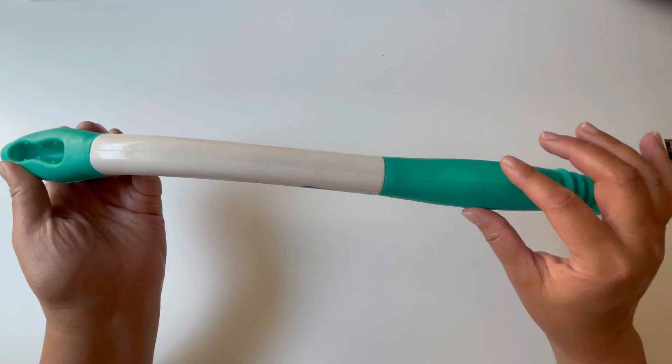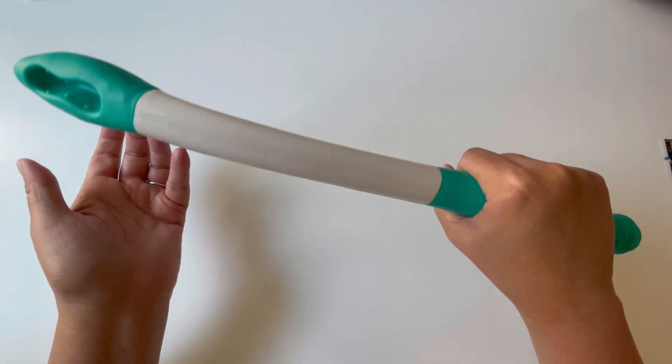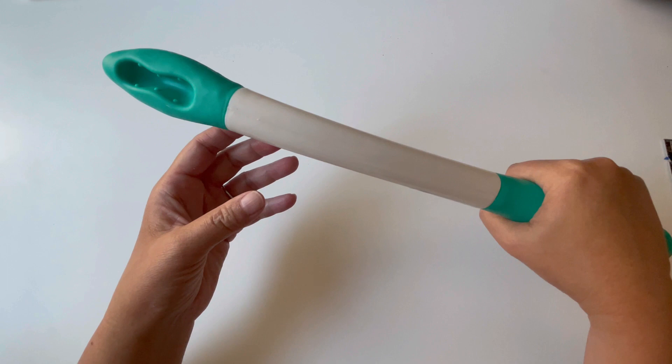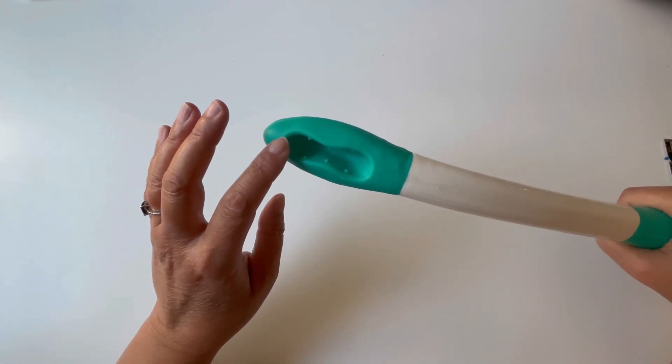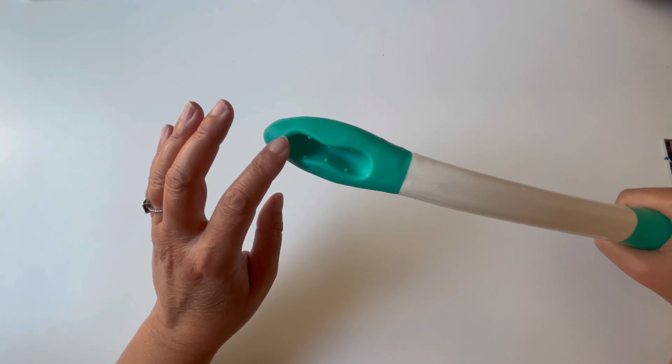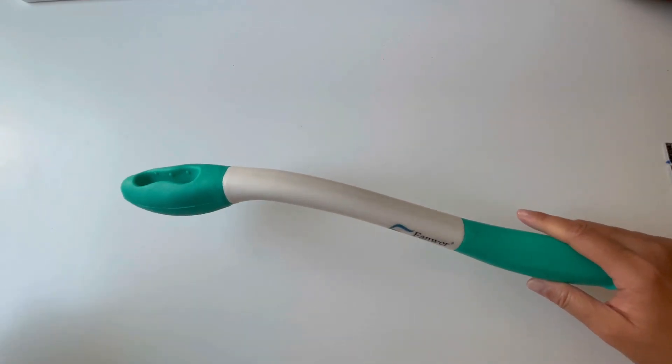The tacky plastic will ensure that you have a firm grip and it grips the wipes or toilet paper securely. This is ergonomically designed so that you can reach your sitting areas.